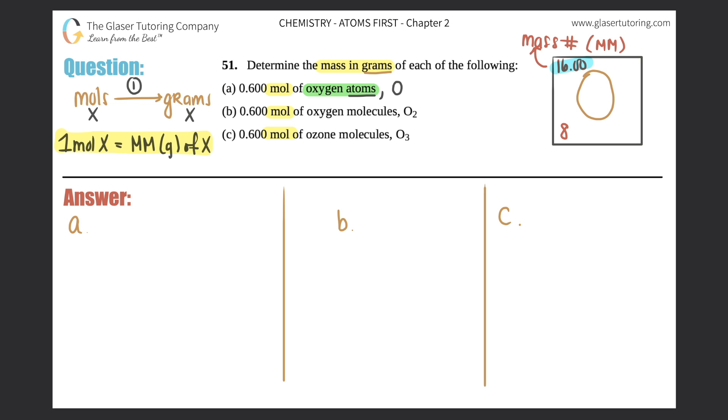Let's start: 0.600 moles of just O, because it's oxygen atoms we're converting. Times by the ratio—moles of O go on the bottom, grams of O goes on top. Now we just have to figure out what these two numbers are. According to this conversion, one mole equals the molar mass in grams of that element or compound.